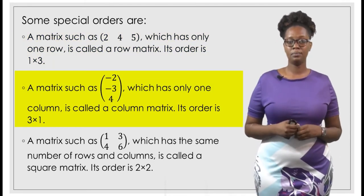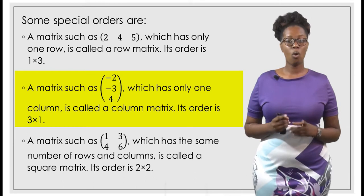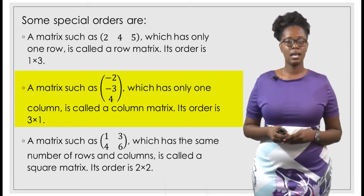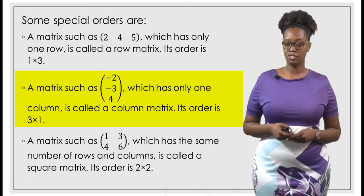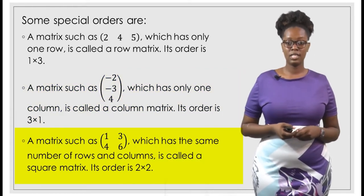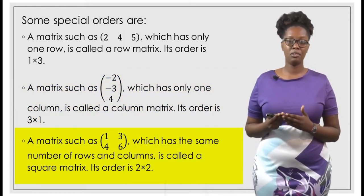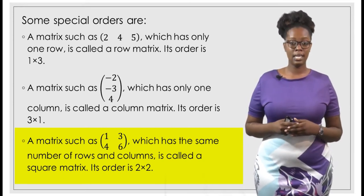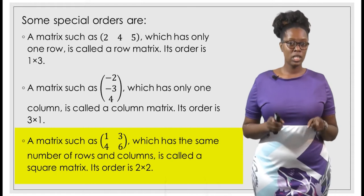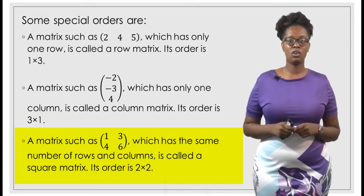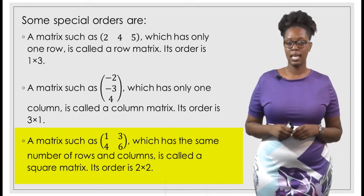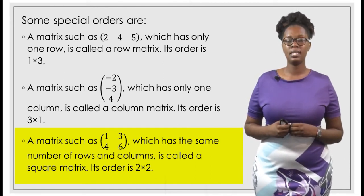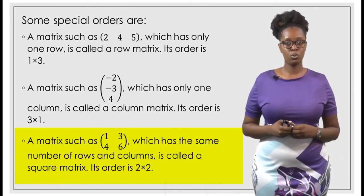Then we have another example. This one has one column but three rows, so this is a three by one matrix. And a matrix such as 1, 3, 4, 6, which has the same number of rows and columns, is called a square matrix. In this example, because it has two rows and two columns, it is a two by two matrix.